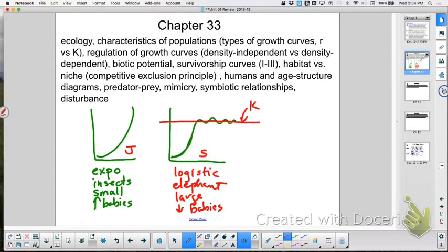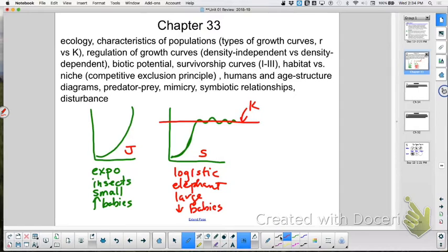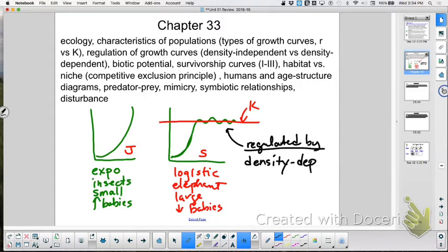And when they are hovering at that caring capacity, what kind of things regulate them that keep them right at that caring capacity? Share with the person next to you. What kind of things regulate them? What do we call that? Okay. Now tell me. It starts with a D. Density. Boom shagalaga. Density what? Dependent. Right? Density dependent. The numbers matter. Right? Things like competition are going to regulate them. Trying to get mates. Trying to get food. That's what keeps them hovering right at their caring capacity.